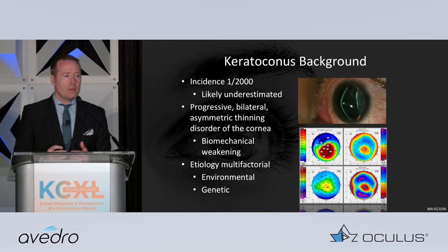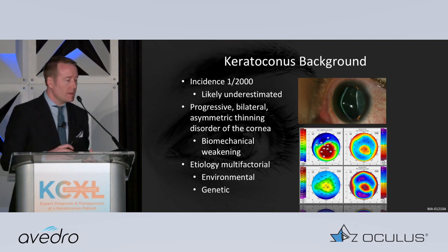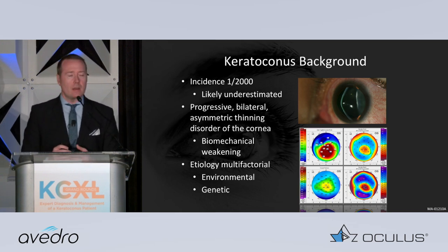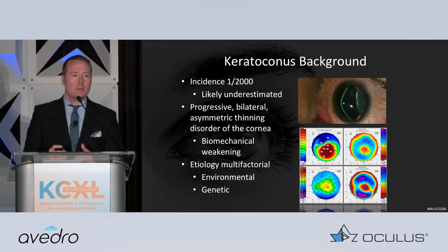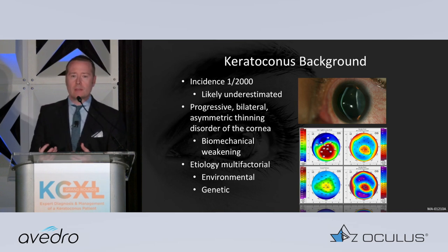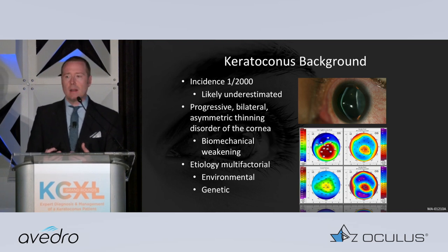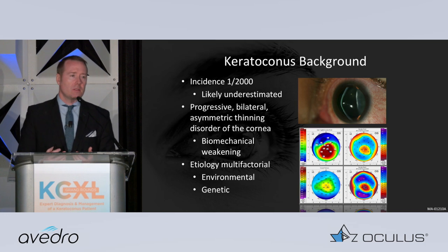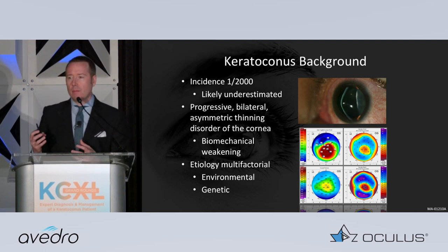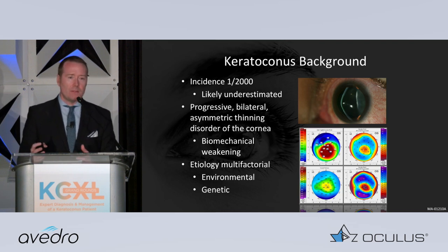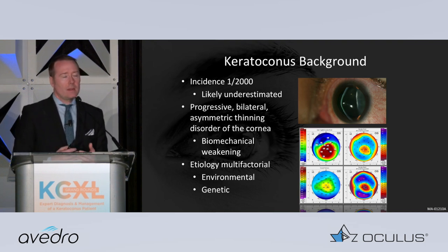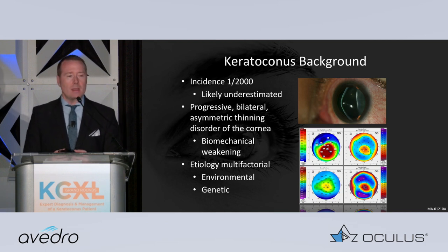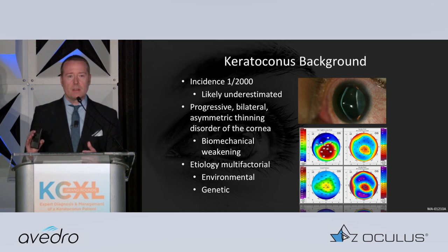More broadly, when we look at the background of keratoconus, I think we would all agree that this is a widely underdiagnosed condition. In the peer-reviewed literature it's reported at about one in 2,000, but this is probably about four-fold more common. We're learning more through routine refractive cataract surgery screenings with routine topography. This is a multifactorial process, likely skewed towards an environmental factor, with eye rubbing being the number one instigating factor.